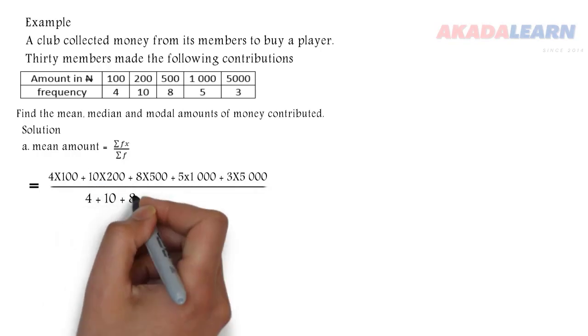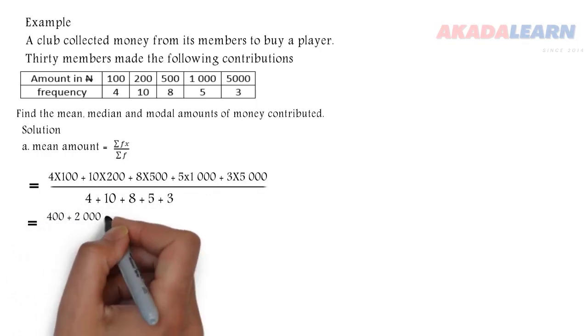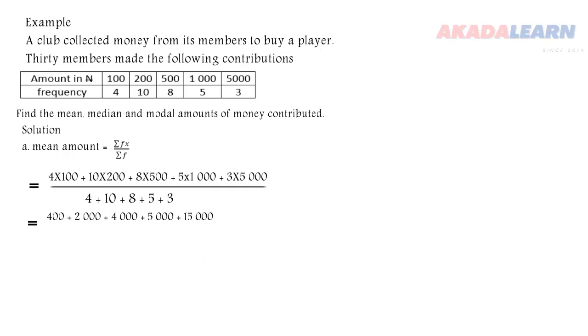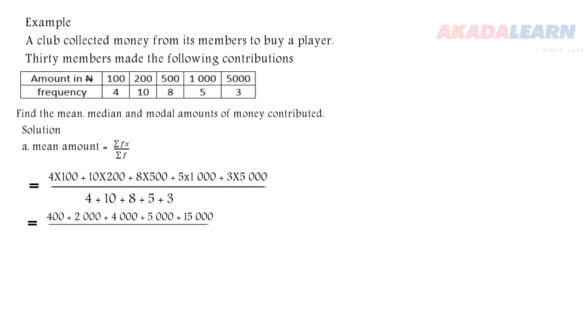We add up the frequency which is 4 plus 10 plus 8, and so on. So 4 times 100 is 400, 10 times 200 is 2000, and so on. We multiply, then we add up the frequencies and we know it should give us 30. So when we add up the numerator, we have 26,400. So we divide it by 30, and we discover that our mean amount is 880.